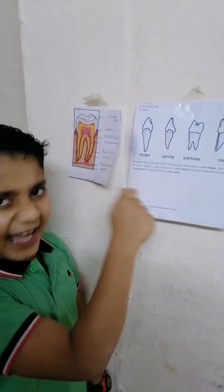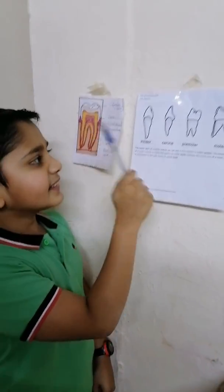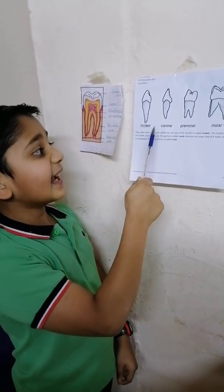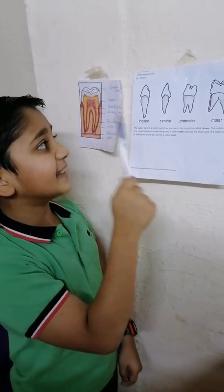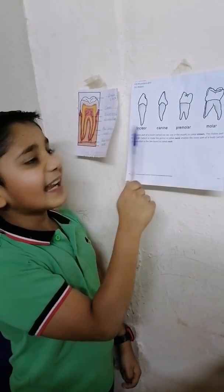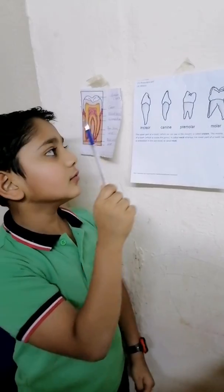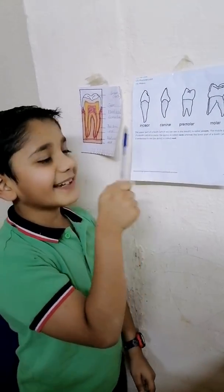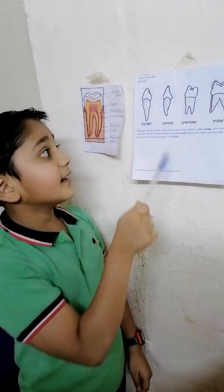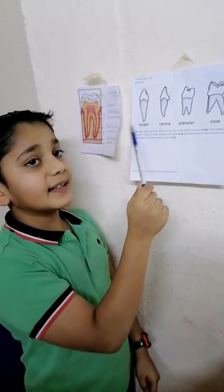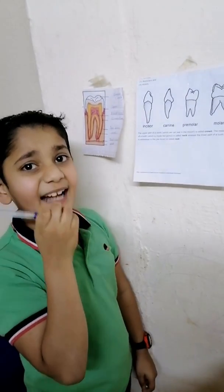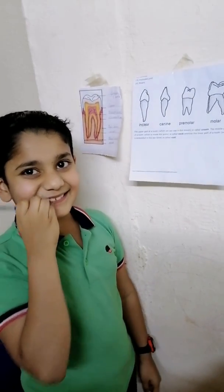Canine. These are very sharp teeth. Canine is also known as tearing teeth. Canines are used to tear food, like we use canine to tear goat meat.